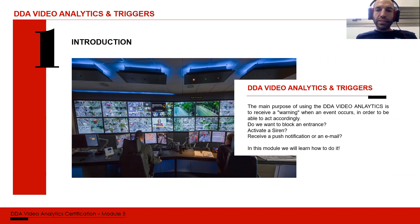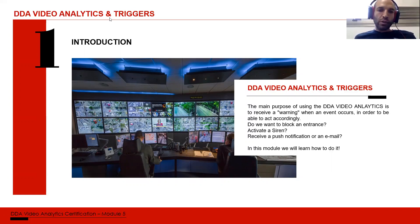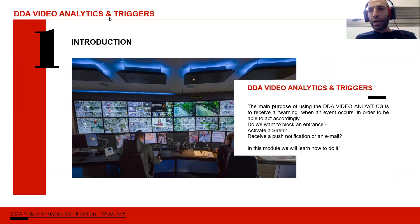Once we detect someone and activate the siren, they know we've detected them and might leave. We might even prevent them from getting in at all if we detect them outside. We can also activate notifications — like emails and push notifications to Provision's mobile app — so we know there may be an event happening at our home or office and can decide how to handle it.